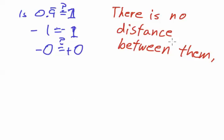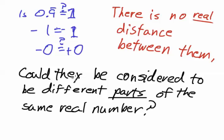Now one thing we have established is, there is no distance between them. And when we say distance, we are referring to real distance, which is distance on the real line. That being said, it still seems relevant to ask whether they could be considered to be different parts of the same real number.